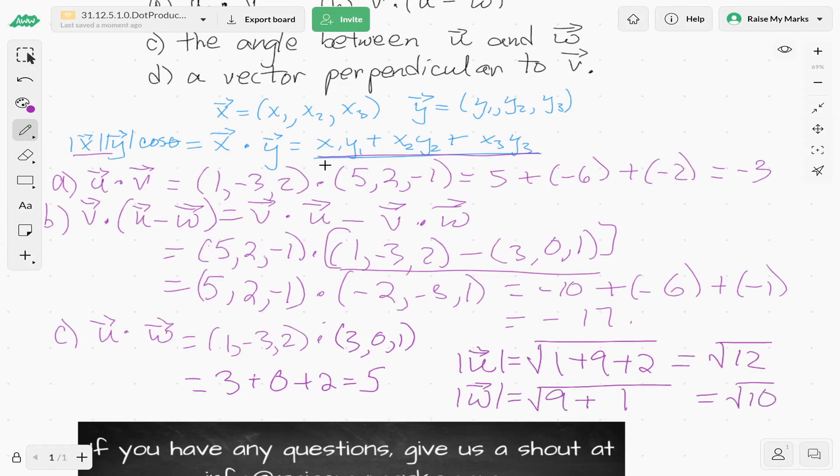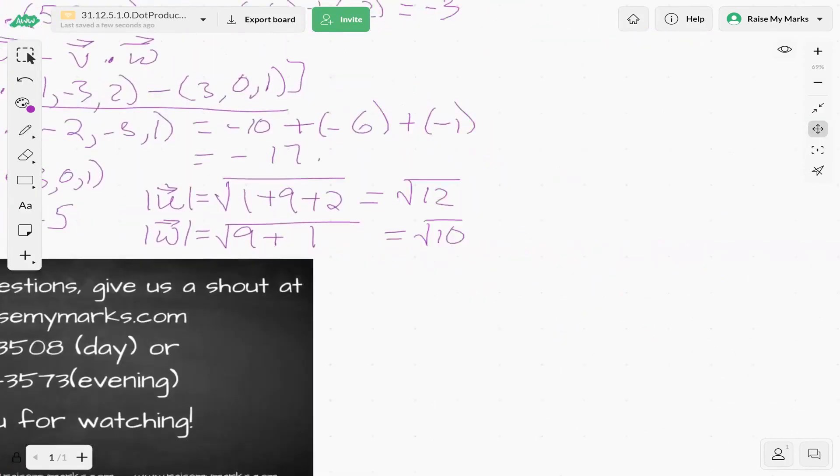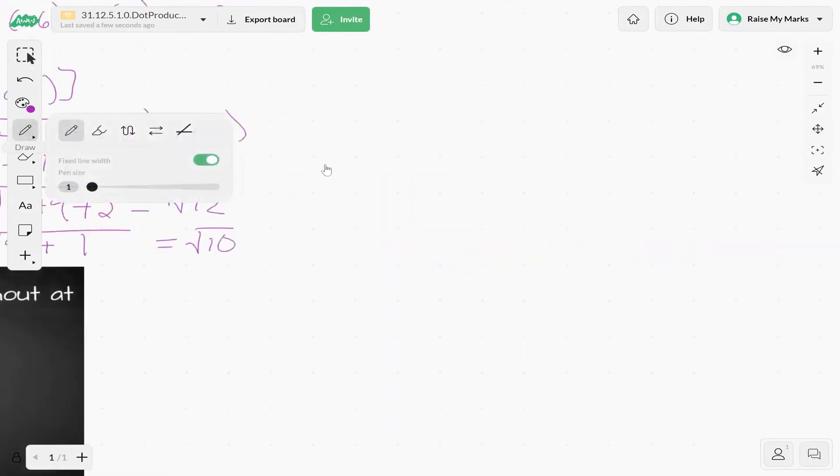Okay. So now we're going to put it all together, both definitions of the dot product. So dot product of u and w equals magnitude of u times magnitude of w times cosine of the angle between them. So this is what we're looking for, that part.